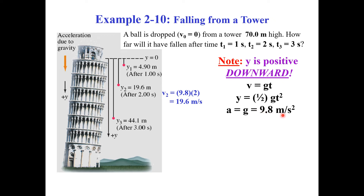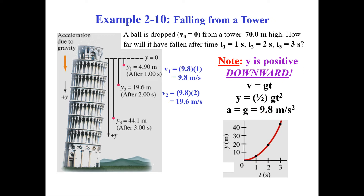Applying the values: at t₁ = 1 s, v₁ = 9.8 m/s. At t₂ = 2 s, v₂ = 9.8 × 2 = 19.6 m/s. At t₃ = 3 s, v₃ = 9.8 × 3 = 29.4 m/s.